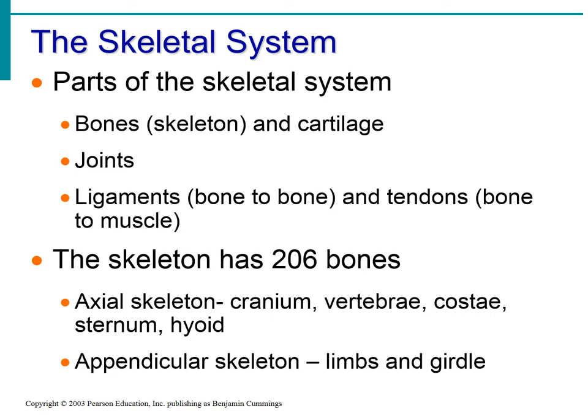The appendicular skeleton covers your appendages — your limbs and girdle, basically your arms and legs. Your pectoral girdle includes the bones making up your shoulders, arms, wrists, hands, and fingers. The pelvic girdle is the opposite: your hips, legs, ankles, feet, and toes. We'll be looking over all of these in this unit.